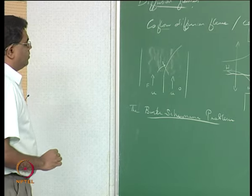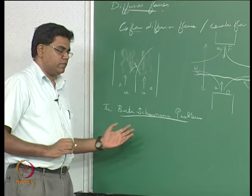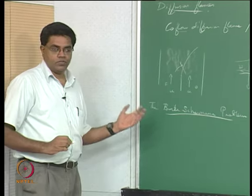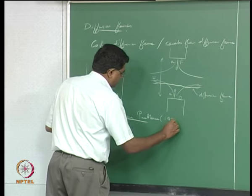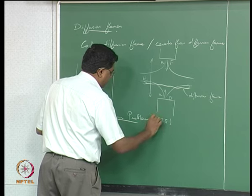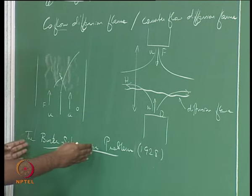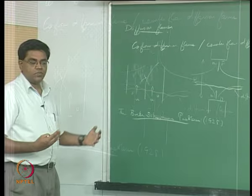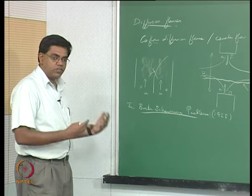The Burke-Schumann problem is a very fundamental problem in combustion. It was presented at the first symposium on combustion in 1928 by Burke and Schumann and subsequently published in the Journal of Industrial Chemistry. It is a celebrated piece of work with numerous citations and many extensions. The name 'Burke-Schumann flame' connotes a certain set of assumptions, referring to limits of very high activation energy and infinite rate chemistry.